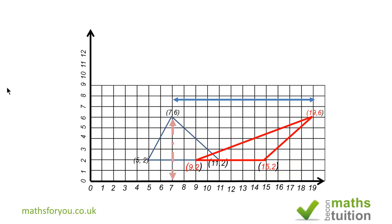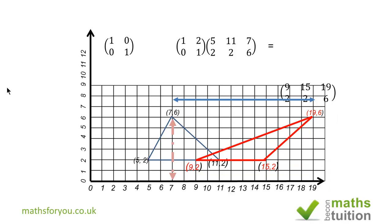With a scale factor of 2, the (5,2) vertex is 2 units from the invariant line, so its displacement is 2×2=4, moving it to (9,2). Similarly, (11,2) moves to (15,2). The identity matrix [1,0; 0,1] becomes [1,0; 2,1]. Multiplying by the vertices gives (9,2), (15,2), and (19,6), confirming what we found by simple arithmetic.